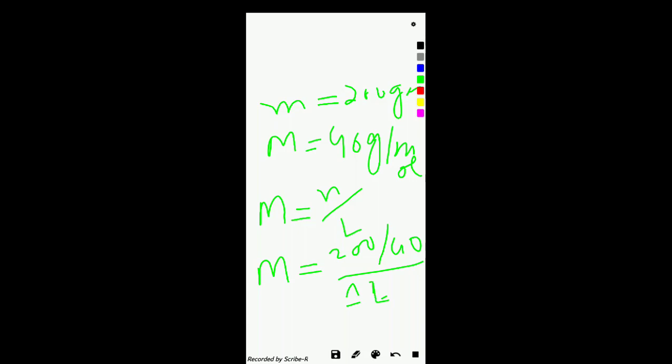From this we will get the molarity of 5 moles per liter. Because number of moles equals mass in grams divided by molar mass, and the molarity is number of moles divided by volume of solution. Hence the molarity will be 5 moles per liter.